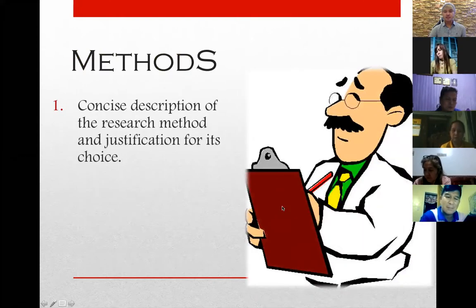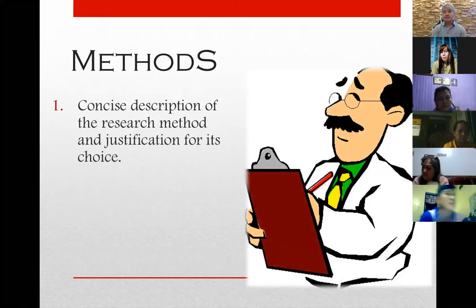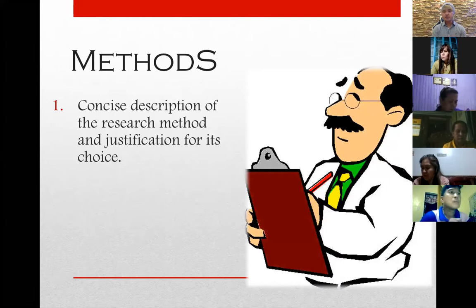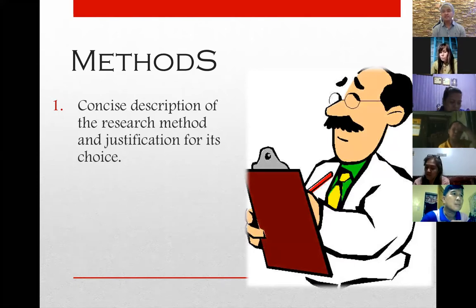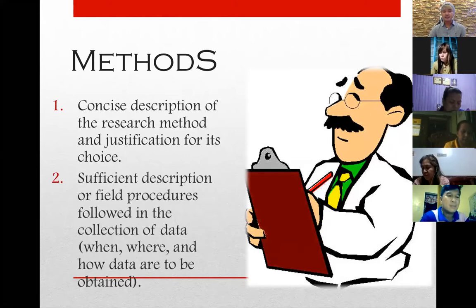Methods, which is the first part of chapter two of Mekawa and Kale, is a concise description of the research method and justification for its use. When you say research method or research design, it's either quantitative or qualitative. In your case, majority of you will utilize the quantitative research method. Specifically, if you are going to use the IBDP model, then your design will be descriptive correlation method. There are many methodologies, but one of the most common is descriptive, and under that is descriptive correlation.